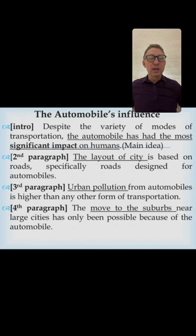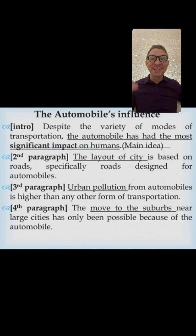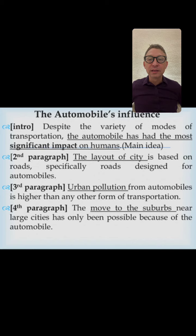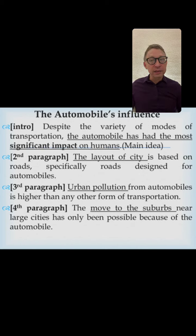The three supporting ideas are: number one, the layout of the city is based on roads used by cars; number two, urban pollution from automobiles is higher than any other form of transportation; and number three, the move to the suburbs near large cities has only been possible because of the automobile. The main idea is the influence of the automobile, supported by these three sub-points.